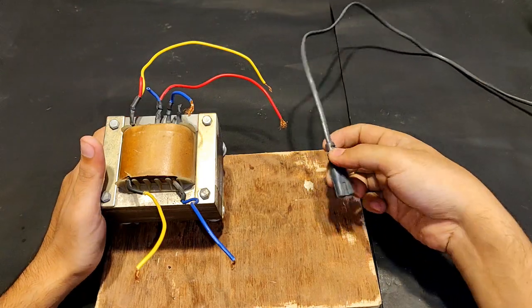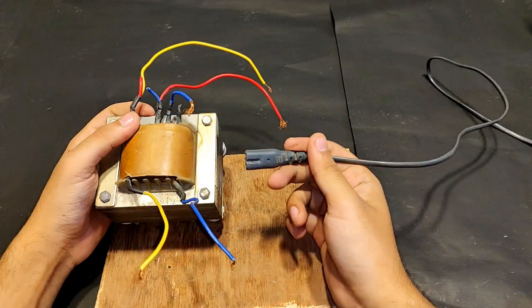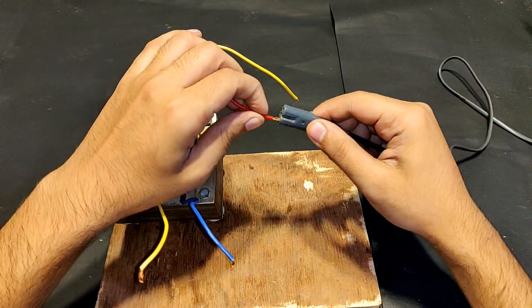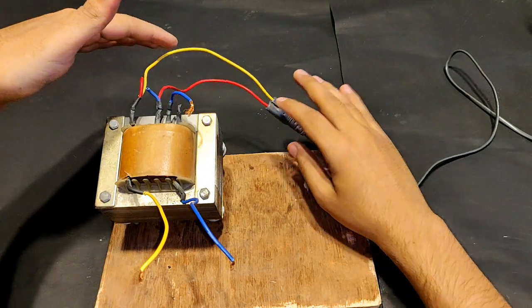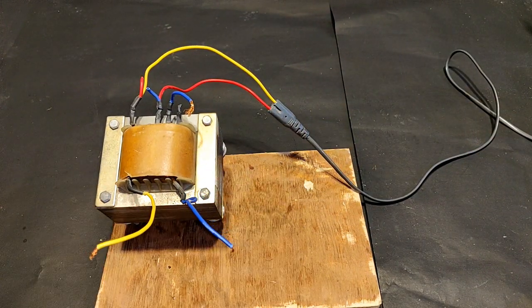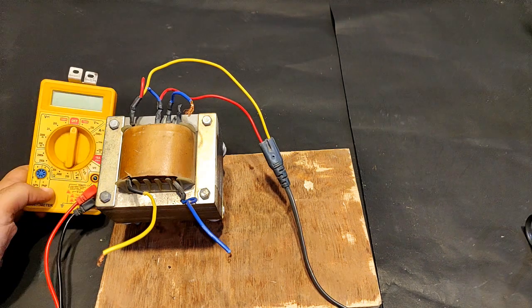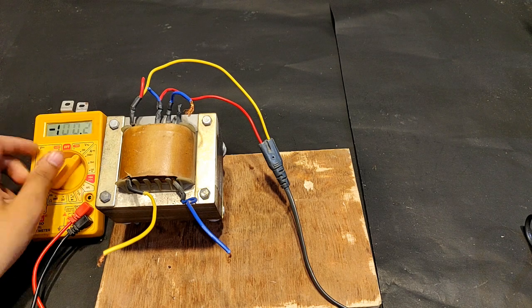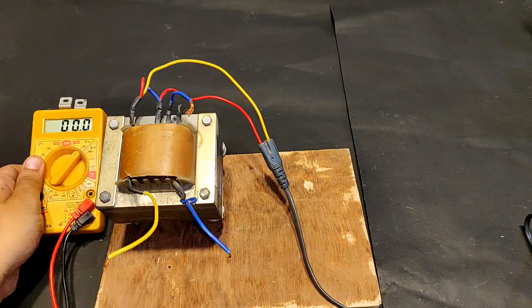With that being done, let's connect 220 volts AC supply to check its output. Connecting it to the supply. At present the supply is turned off just for safety purposes. Now I will turn it on and connect a multimeter on these two terminals. The output is obviously going to be AC, so pointing towards 200 volts AC mode.